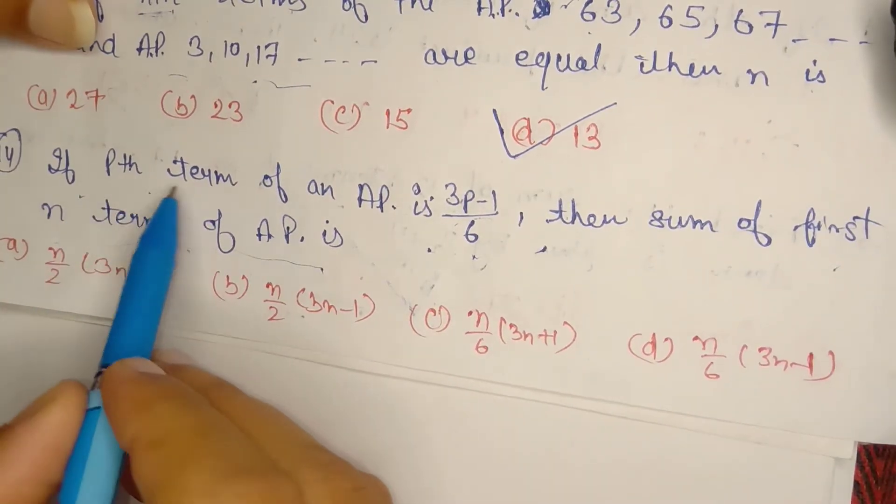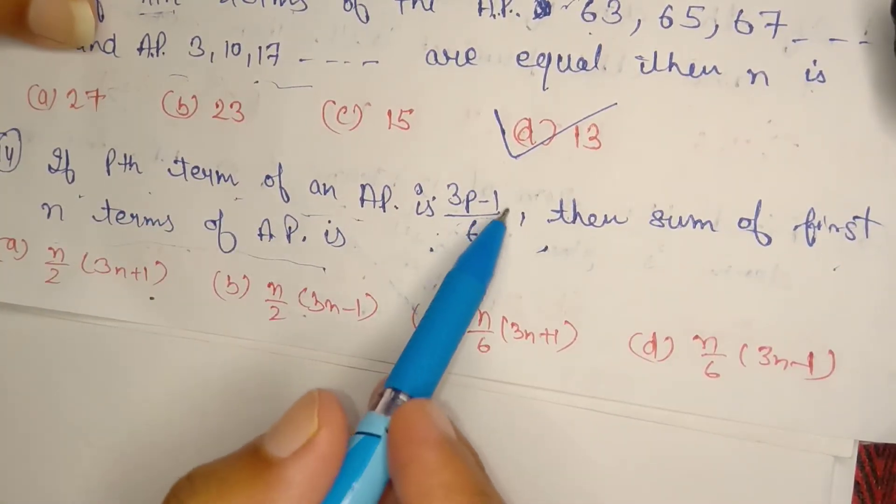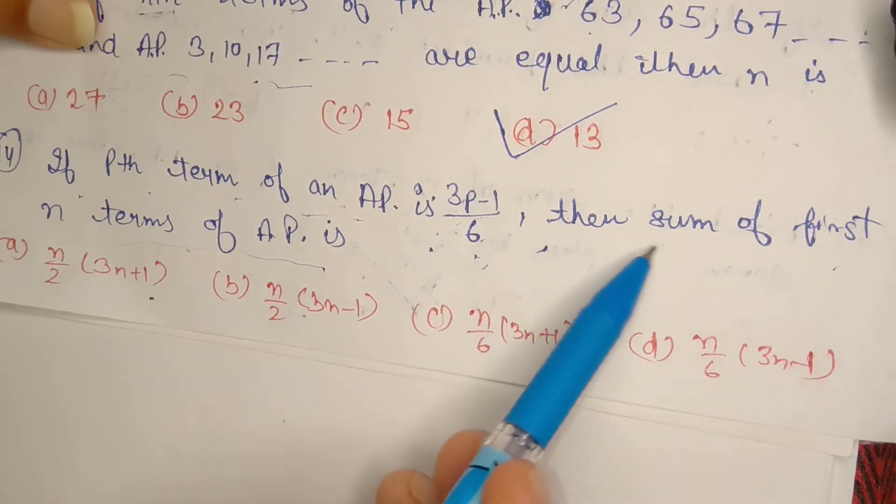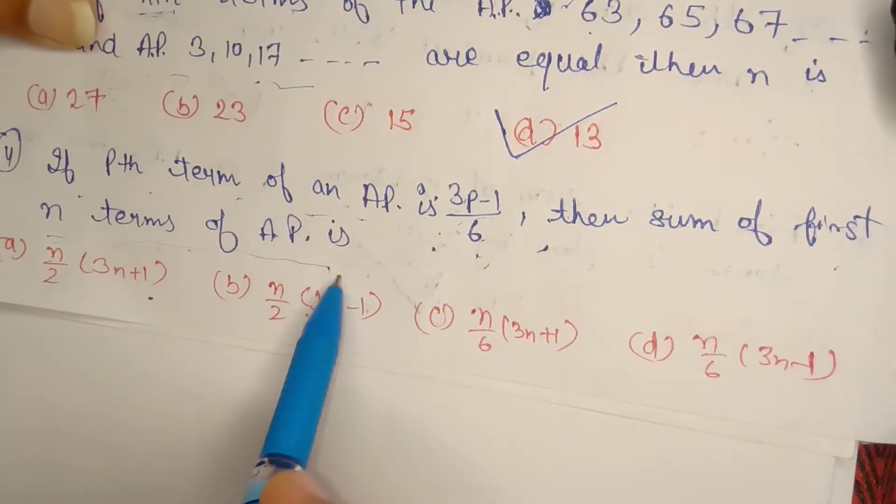The question is: if the pth term of an AP is (3p - 1)/6, then find the sum of first n terms of the AP.